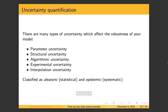Moving on to uncertainty quantification. There are many types that can affect the robustness of your model, and they fall into two broad categories: aleatoric and epistemic — or in plain English, statistical uncertainty and systemic uncertainty. They're often broken down into parameter, structural, algorithmic, experimental, and interpolation uncertainty. It's good to worry about these and rule out or provide evidence that they don't affect the correctness of your results. See Oberkampf and Roy for more information.